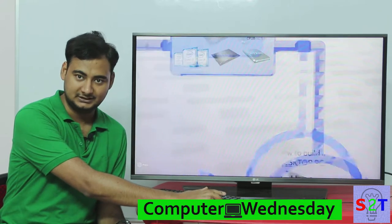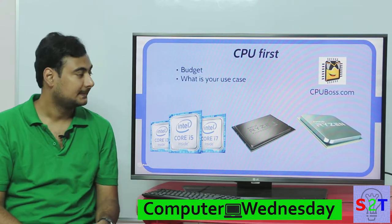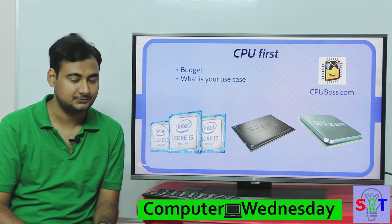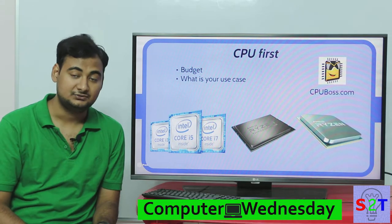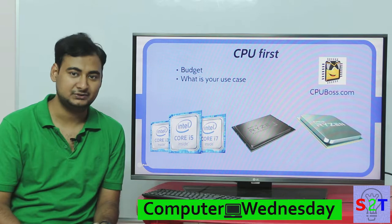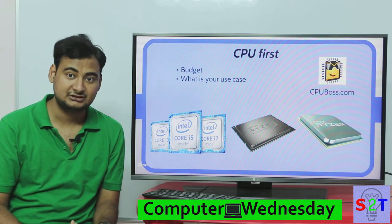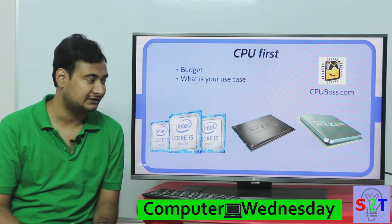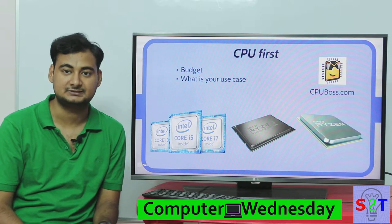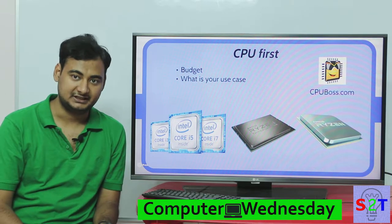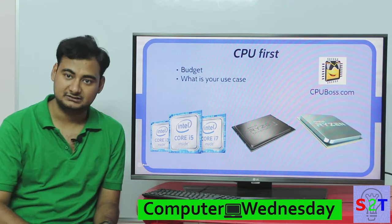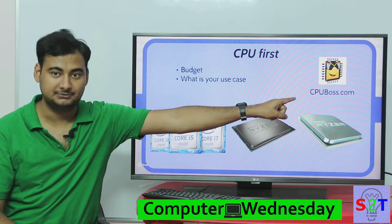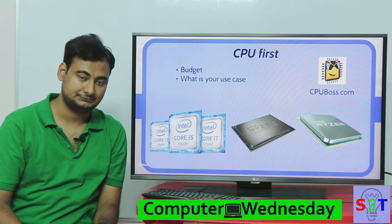Let's look into CPUs. The most important things are your budget and your use case. For gaming, you only need six to eight cores maximum. For professional work like video rendering or CAD modeling, you need as high as you can get. For home theater, buy an AMD APU for the best onboard graphics. Know your use case and budget, and use CPUBoss.com to compare CPUs.